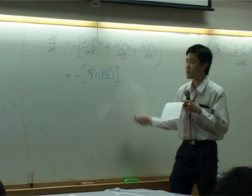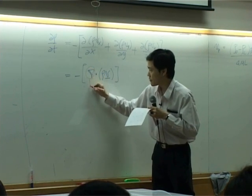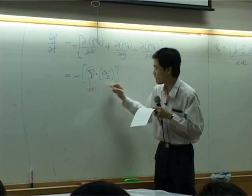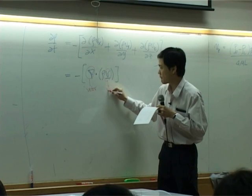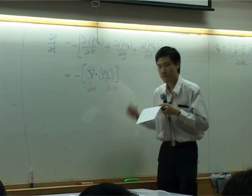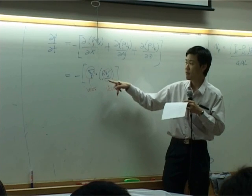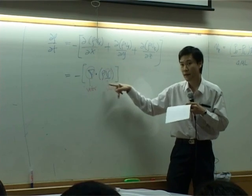Now, if you look, this is a vector. This is vector. You multiply vector by scalar, you still get a vector.